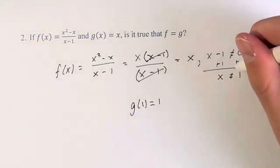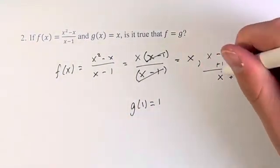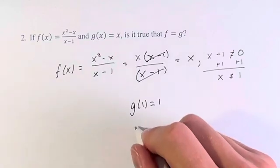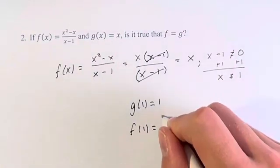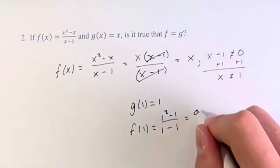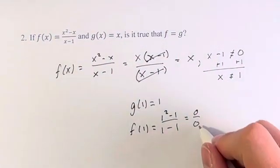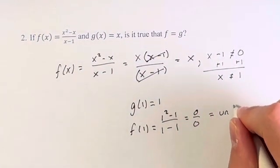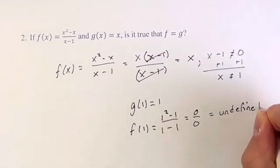For f, by plugging 1 into the original function, we get f(1) is equal to 1 squared minus 1 over 1 minus 1, which is 0 over 0. This is undefined or indeterminate.